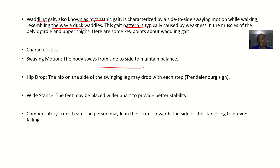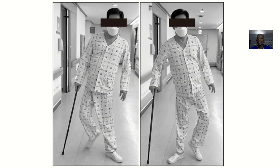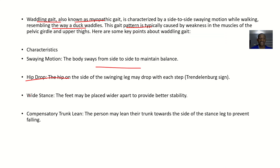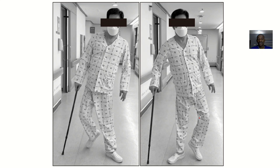The characteristics include a sway motion where the body sways from side to side to maintain balance, hip drop where the hip on the side of the swinging leg may drop with each step, a wide stance where the feet are placed wider apart for better stability, and compensatory trunk lean where the person leans their trunk towards the stance leg to prevent falling.